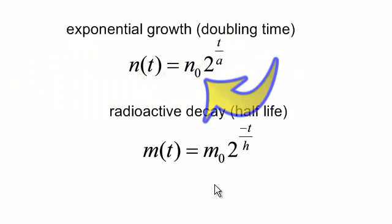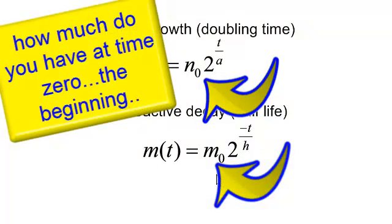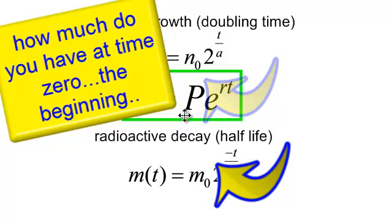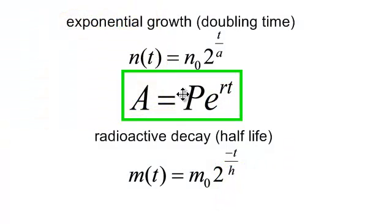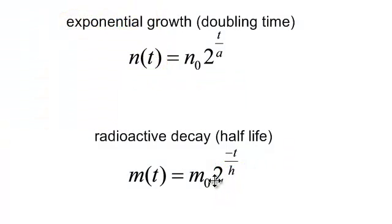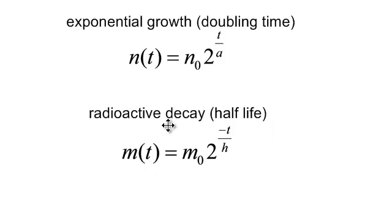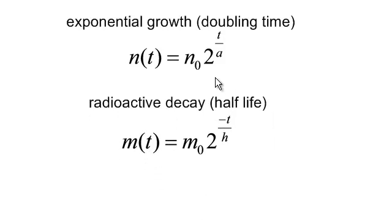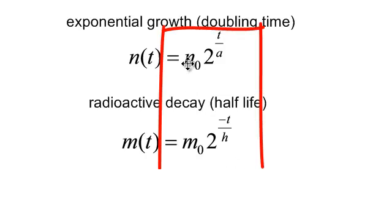Sometimes we call this N-naught or M-naught. Basically it's the amount of material we have at the beginning, just like our principle. How much money are we putting in the bank? So N-naught, M-naught, how much do we have in the beginning? Now, in this exponential growth or radioactive decay, instead of E, for this particular formula, they're using 2.